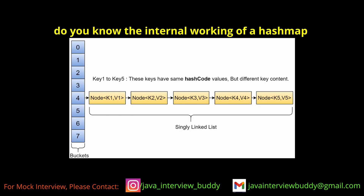Do you know the internal working of a HashMap? When we add an element using the put method, the element gets its hash code value calculated. That hash code value is divided by the default 16-bucket capacity, and based on the index computed, the value is stored in the corresponding bucket number.